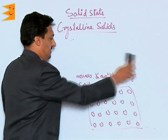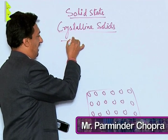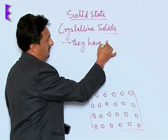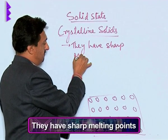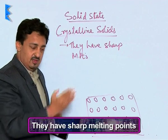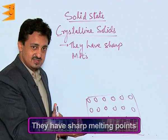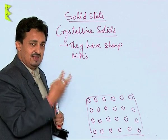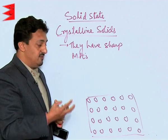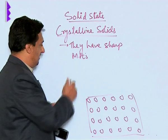Another important thing about crystalline solids: they have sharp melting points. They melt only at a particular temperature — just before that they are always solid, and after that temperature they are completely liquid. So they have a definite melting point, which is a characteristic feature and intrinsic property. We can even identify a solid on the basis of its melting point.